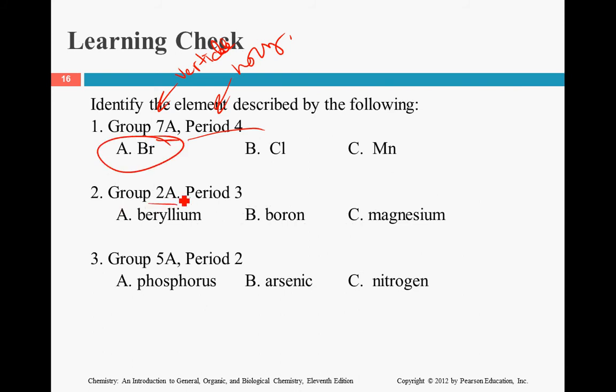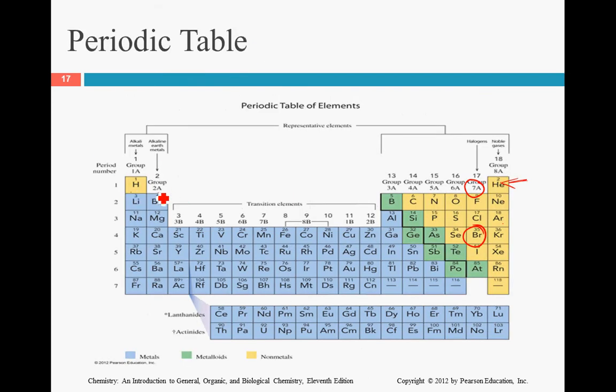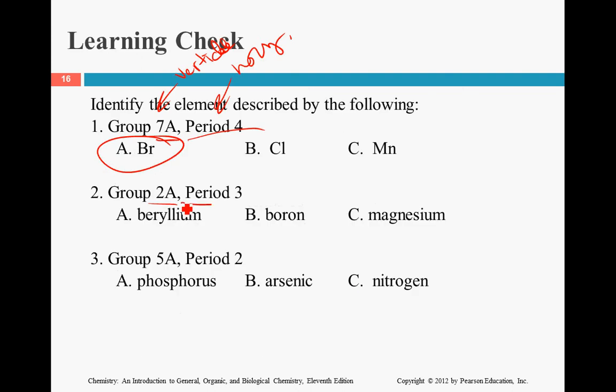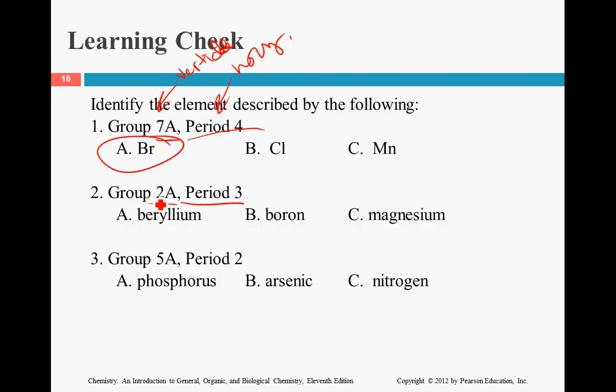Okay, so group 2A. So, 1, 2. This is the group 2A. Period 3. That's the third row down. 1, 2, 3. We're looking at magnesium with this one.